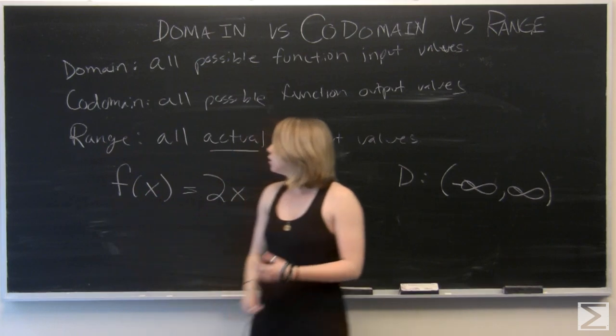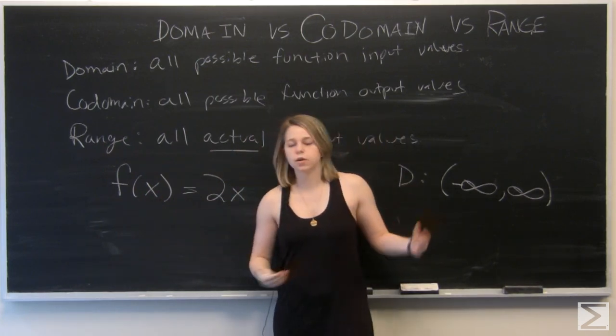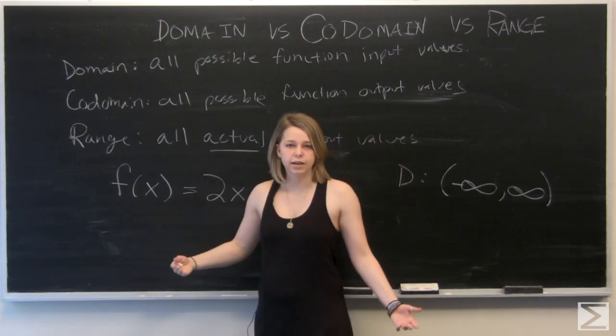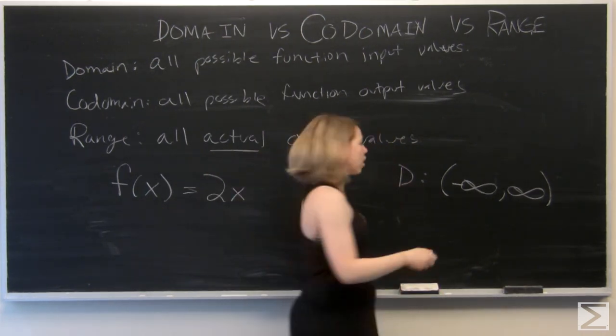And our codomain, we can get out any possible number. All of the f of x values are valid. So anything from negative infinity to infinity, all real numbers again.